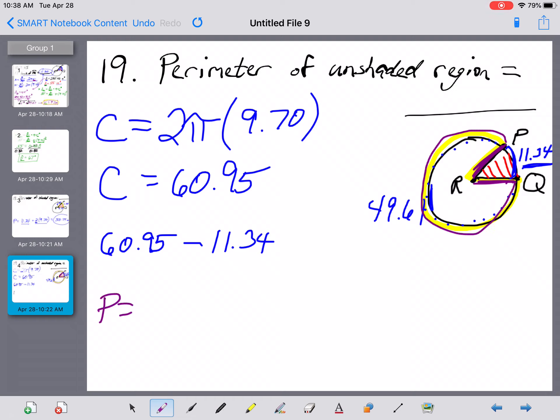So my perimeter now is the arc, 49.61, plus two radii at 9.70 each.